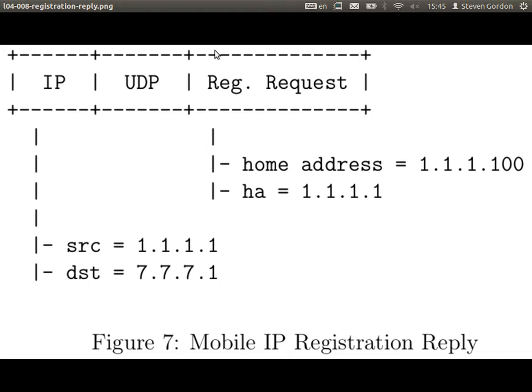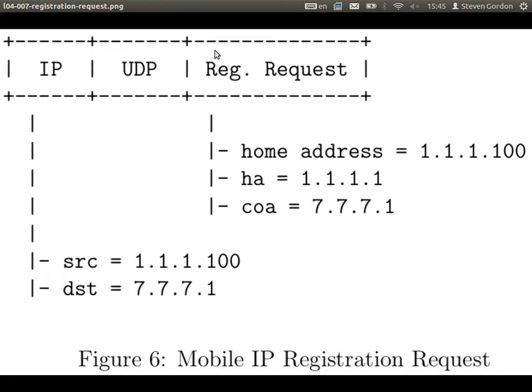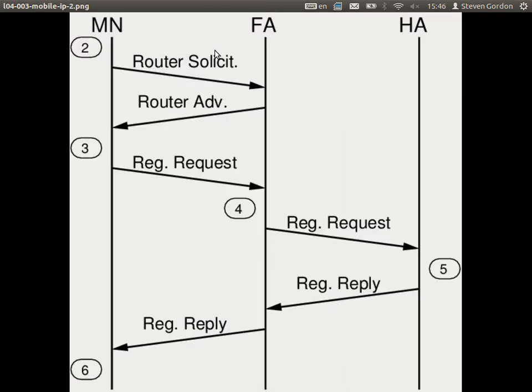Then we can start sending and receiving data. We're not going to attempt to describe that today — we need a bit longer. We'll do it next week. To understand at least: the different ways to discover agents, and that the registration goes via mobile node, foreign agent, home agent, and back. We still have to go through what happens when we send data, because we need extra techniques to handle that. We will not try to explain that this afternoon.